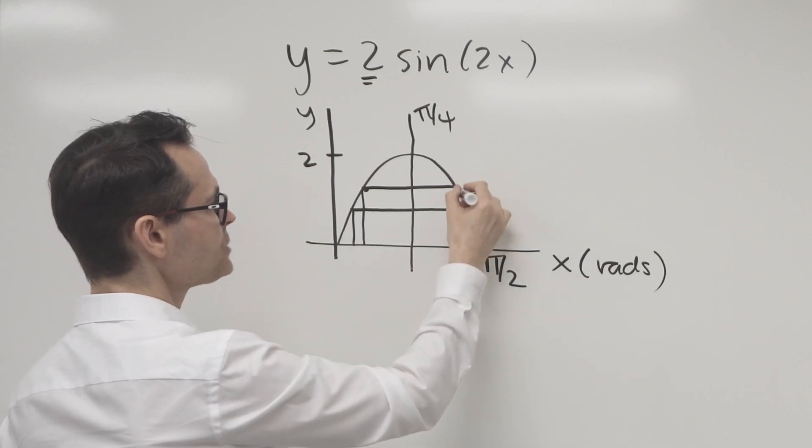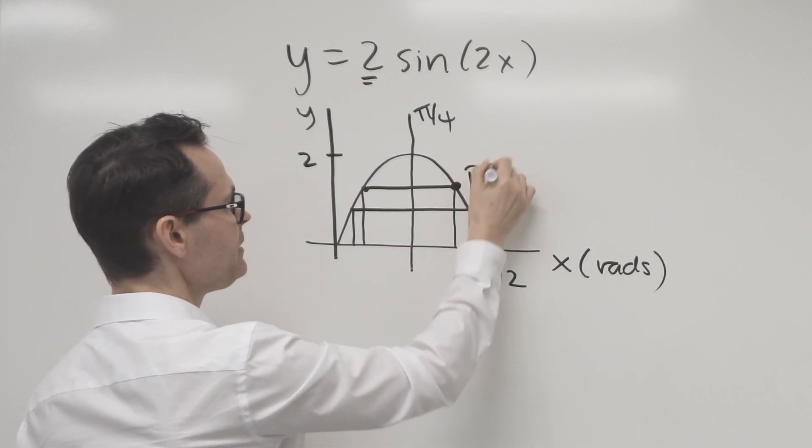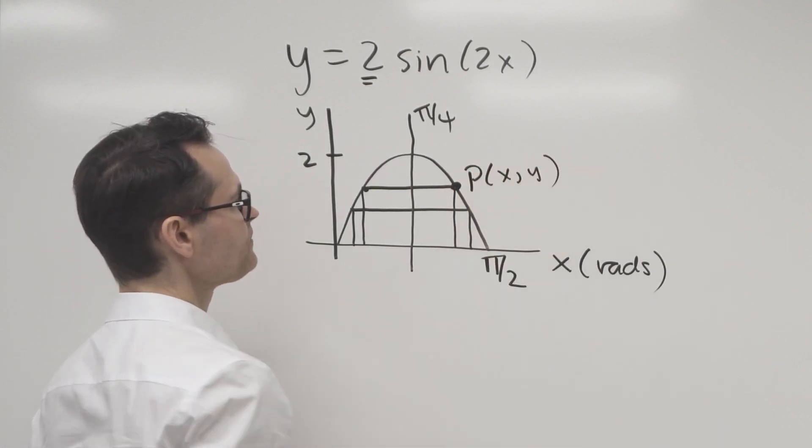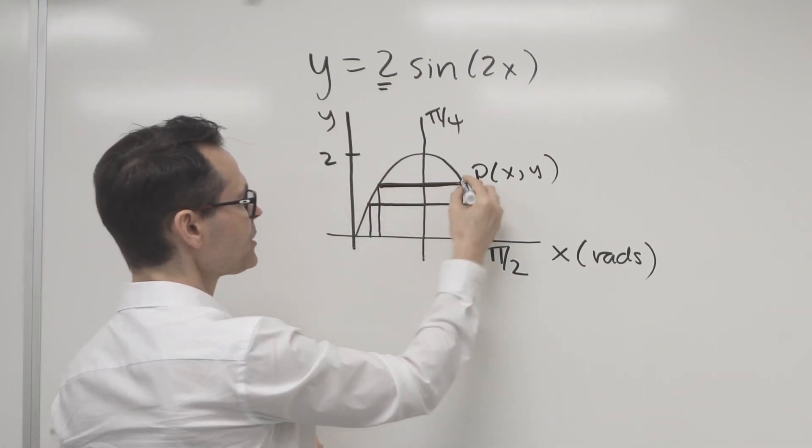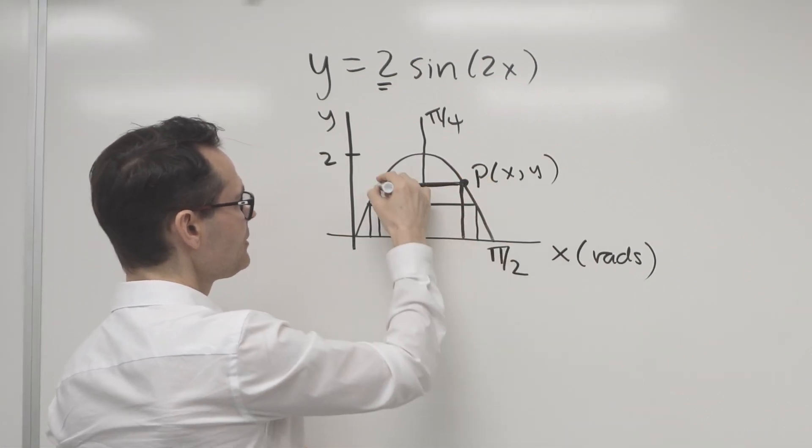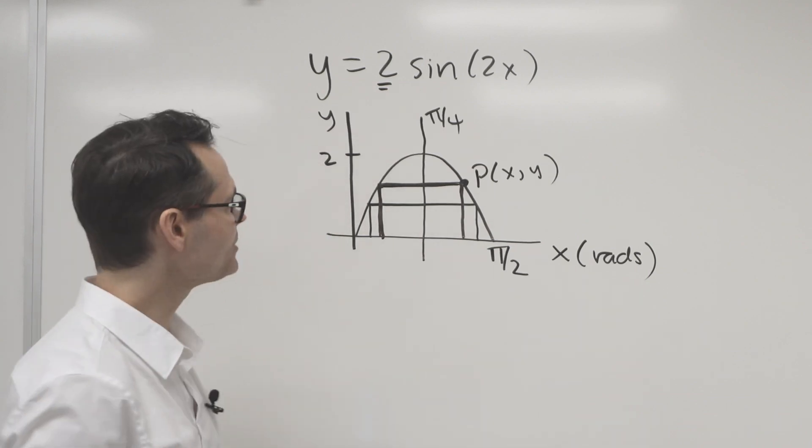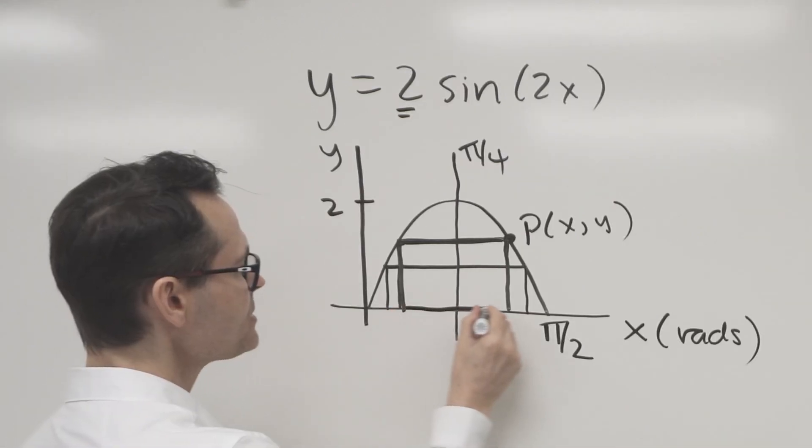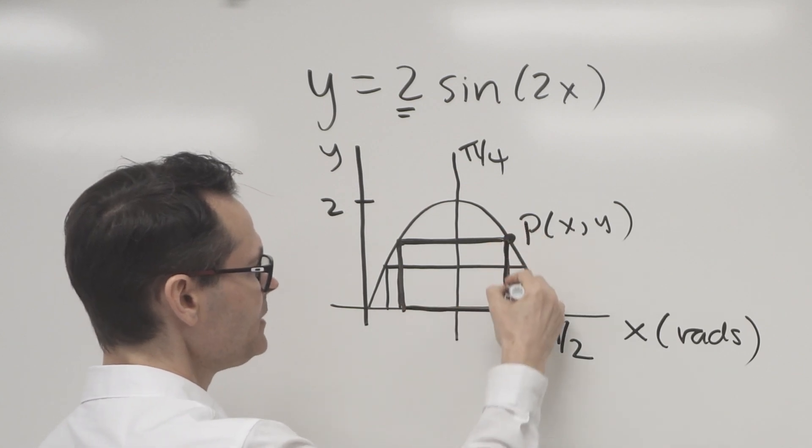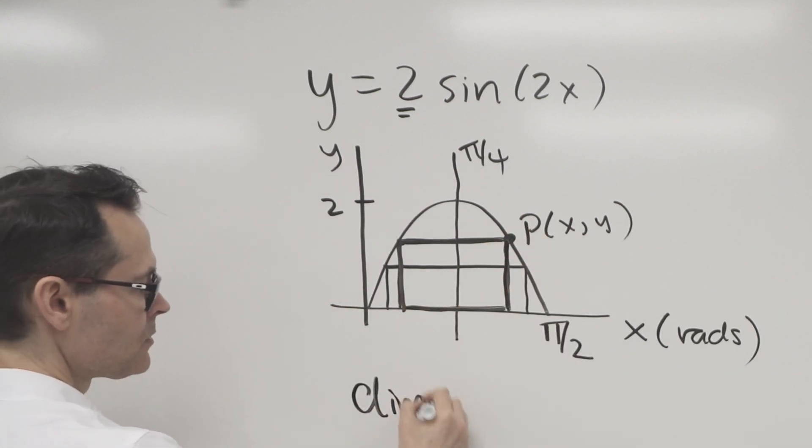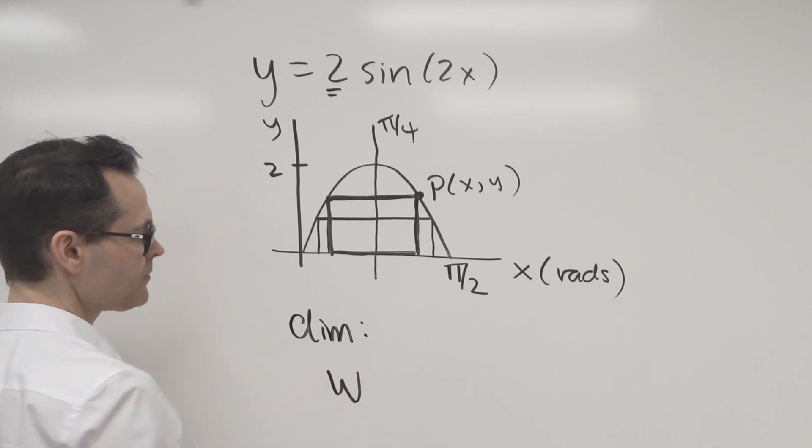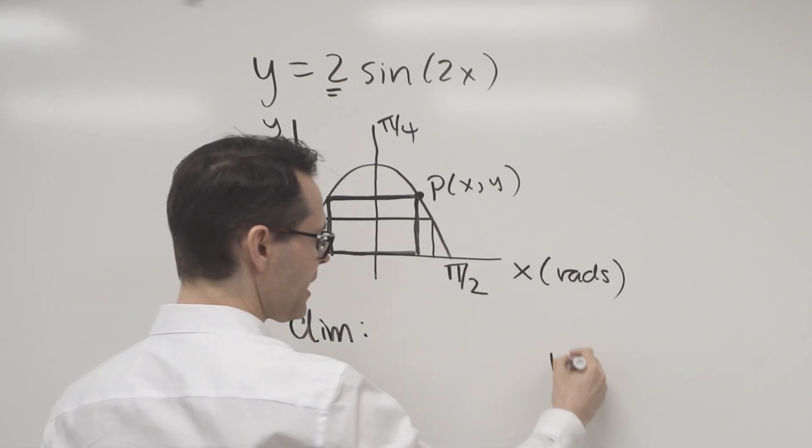Halfway between zero and pi over two. Let's just take this point here, p, I'll call it x, y. Let's take this to represent the rectangle that might be the one that gives us maximum perimeter. So I need the dimensions, I need the width and I need the height.